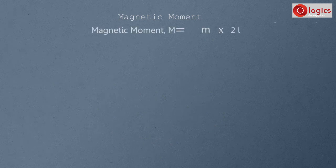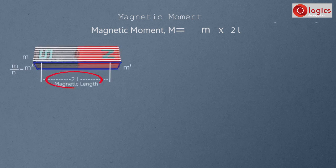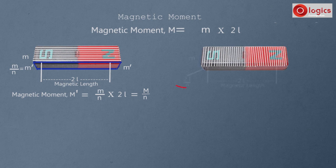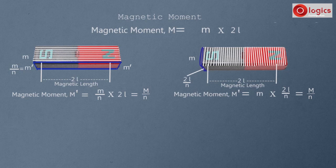Conclusion: The magnetic moment of the given magnet M equals m into 2L. When the magnet is cut parallel to the magnetic axis, the length remains the same (2L) but pole strength becomes m/N, so magnetic moment M' = (m/N) into 2L = M/N. When the magnet is cut perpendicular to the magnetic axis, the length becomes 2L/N but pole strength M remains the same, so magnetic moment M' = M into (2L/N) = M/N. In both cases, the magnetic moment of each piece equals M divided by N.